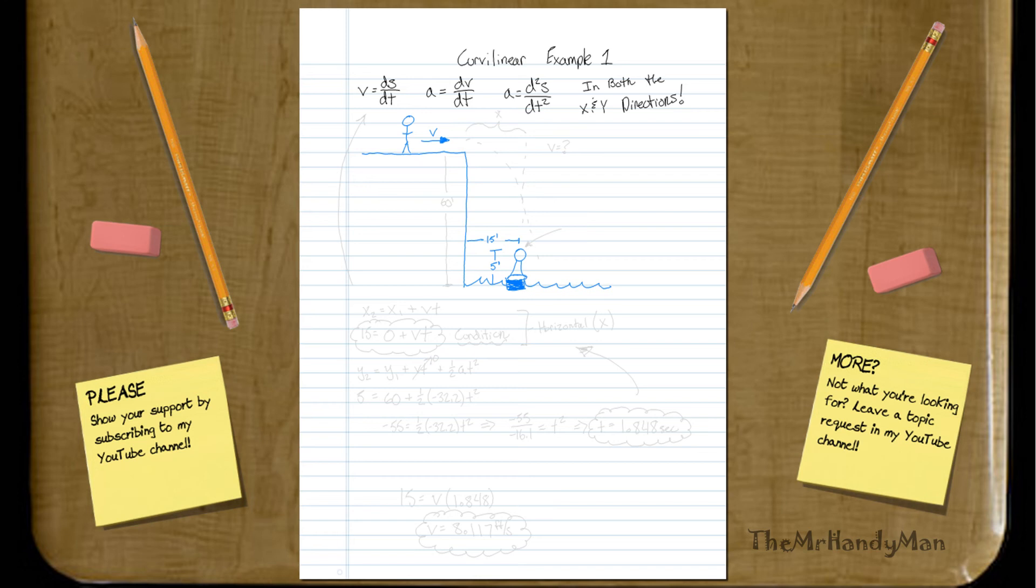And the cliff is 60 feet high. Now first off, this shoots off horizontally, so he's running off perfectly horizontally, he's not jumping off.